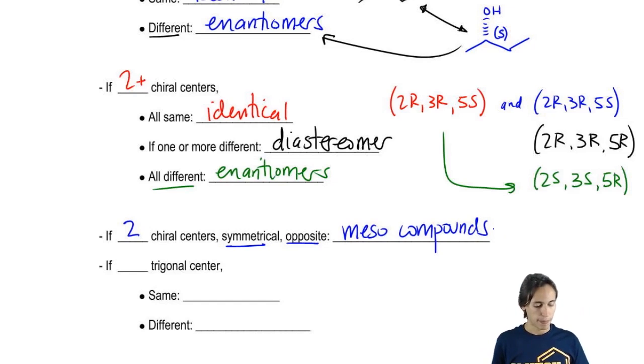So those would be meso compounds. And then finally we've been talking about chiral centers. What about trigonal centers? That's kind of its own thing. So for trigonal centers, if I have one or more trigonal center and both of them are the same, then that's going to be identical.